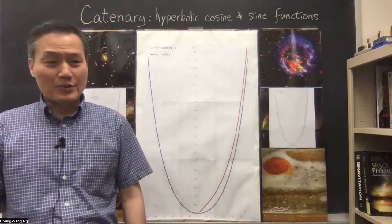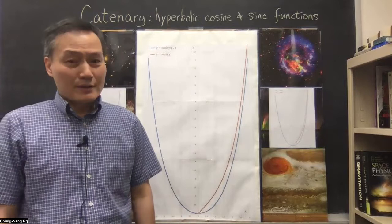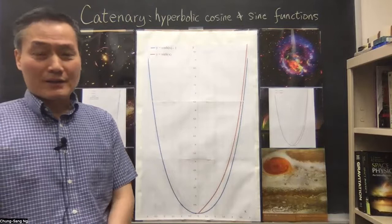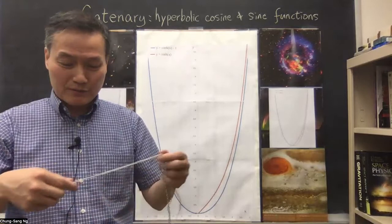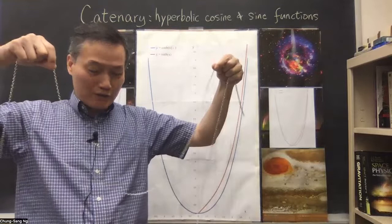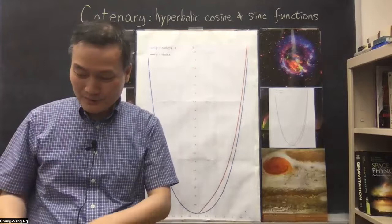In another video, I explain the mathematics behind a catenary — that the shape of a catenary is given by a hyperbolic cosine function, or cosh function. Basically, a catenary is the shape you get when you hang a chain or a string and let it sag down. That shape is what we call a catenary.